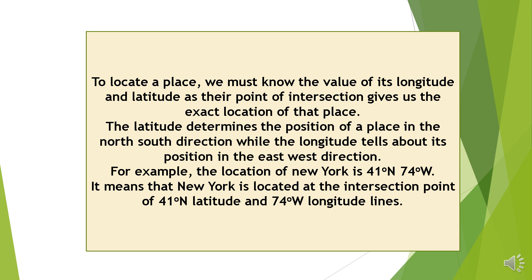To locate a place, we must know the value of its longitude and latitude, as their point of intersection gives us the exact location of that place. The latitude determines the position of a place in the north-south direction, while the longitude tells us about its position in the east-west direction. For example, the location of New York is 41 degrees north, 74 degrees west — meaning New York is located at the intersection point of the 41 degrees north latitude and 74 degrees west longitude lines.